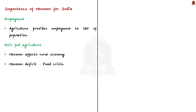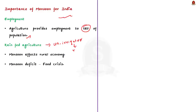Let us understand why we give so much importance to the Indian monsoon. There are two reasons. First, India is still an agricultural country. Although agriculture's contribution to India's GDP has reduced significantly, it still provides employment to around 58% of the population. Second, the majority of agricultural land in India is unirrigated, meaning it is rain-fed. So if monsoon fails, the total rural economy is affected, resulting in food shortage.